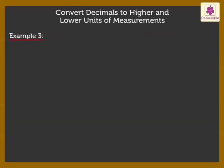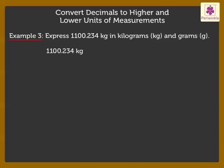Next, express 1100.234 kilograms in kilograms and grams. Here, 1100 forms the integral part and 234 the decimal part. Thus, the answer is 1100 kilograms 234 grams.